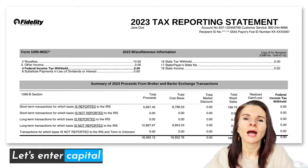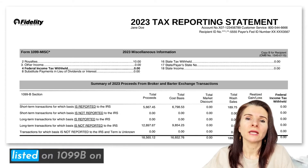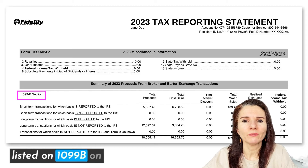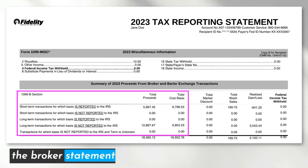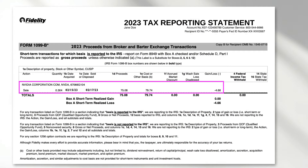Let's enter capital gains and losses listed on 1099B and the broker statement into FreeTaxUSA and TurboTax. It lists detailed information on securities and properties sold, such as stocks, bonds, etc.